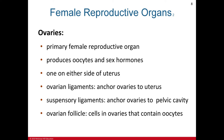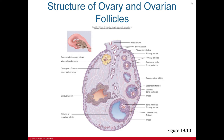The ovaries are the primary female reproductive organs; they produce oocytes and sex hormones. One ovary on either side of the uterus functions to produce oocytes and sex hormones. The ovarian ligaments anchor the ovaries to the uterus, and the suspensory ligaments anchor them to the pelvic cavity. The ovarian follicles are the cells in the ovary that contain or surround the oocytes, and they develop at different times throughout a female's life.